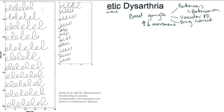Interestingly, levodopa doesn't make a huge difference to speech or swallowing. In general, you don't see amazing changes after levodopa, whereas you do with walking or handwriting. That reduced amplitude and frequency results in micrographia — the writing is a lot smaller overall and letters are closer together, so the whole amplitude and frequency of these movements are reduced.